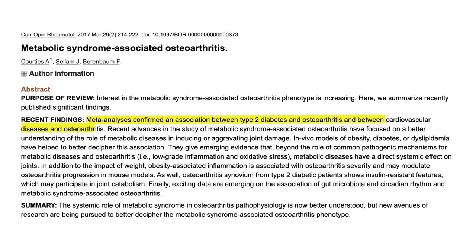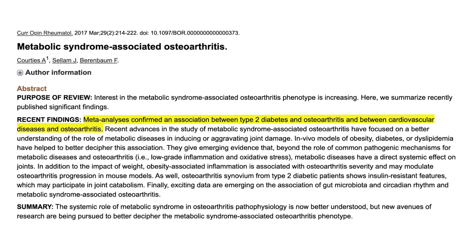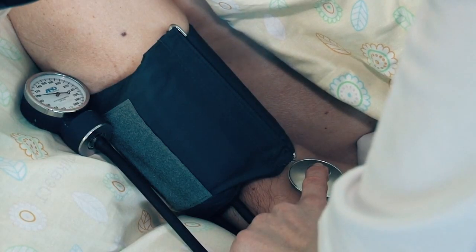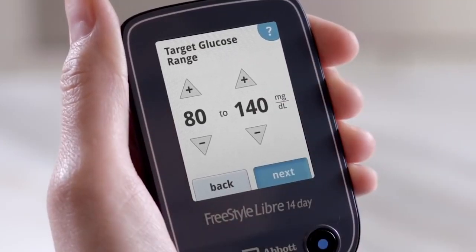More recently, osteoarthritis has been linked to metabolic syndrome, which is a group of conditions that often occur together, including increases in blood pressure, blood sugar, cholesterol, and obesity, and together these increase your risk of heart disease and type 2 diabetes.